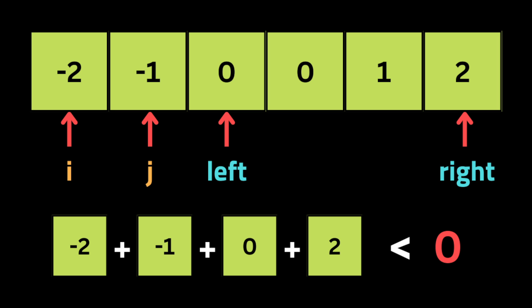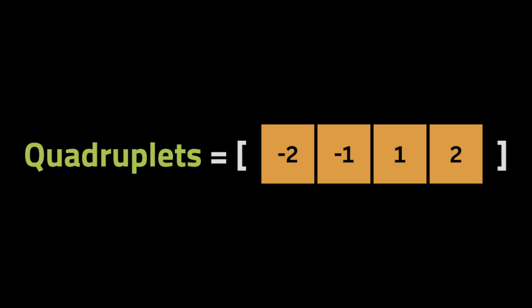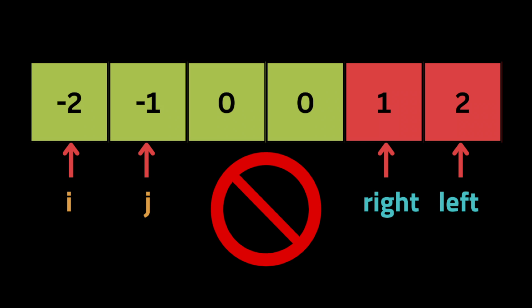If the sum equals the target, we append the four values to the quadruplets list. If it's smaller, we move the left pointer to the next number. If it's bigger, we move the right pointer to the previous number. Here the sum is less than zero, so we move the left pointer forward. After moving again, the four values sum to the target, so we push them to the quadruplets array, then move left forward and right backward. Once left passes right, we stop iterating.